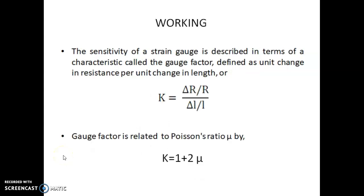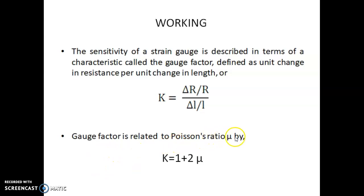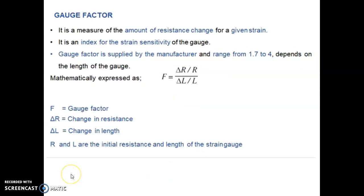An important term related to strain gauges is gauge factor, which is an indication of sensitivity. Gauge factor K is given by delta R divided by R — unit change of resistance per unit change of length. The gauge factor is also related to Poisson's ratio by K equals 1 plus 2 mu. Note that Poisson's ratio is represented as mu here, though it was earlier referred to as nu.